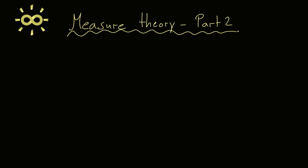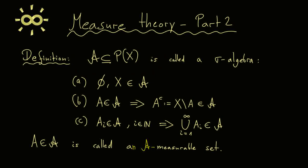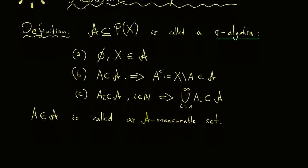Welcome back to measure theory. This is part two, and we still have to talk a little bit about sigma algebras. Here you can see the definition from last time. In short, a sigma algebra is just a family of subsets of a given set X which fulfills three rules: the empty set and the full set are always in the sigma algebra, for each set the complement is also in the sigma algebra, and we can form arbitrarily countable unions inside the sigma algebra. All sets that are elements in the sigma algebra are called measurable sets.